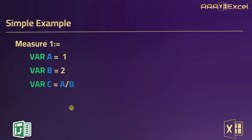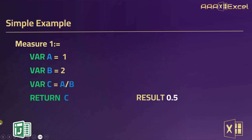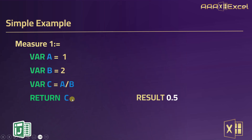Now I'm done with all my variables and I want to decide the final result of this measure, so I'm going to use the keyword RETURN. In this case, the RETURN will be only the variable 'c'. The result will be 0.5, which is basically the division of 'a' over 'b', which is 1 over 2 or 0.5. You can notice that we used only one variable in the RETURN statement — the variable 'c'.